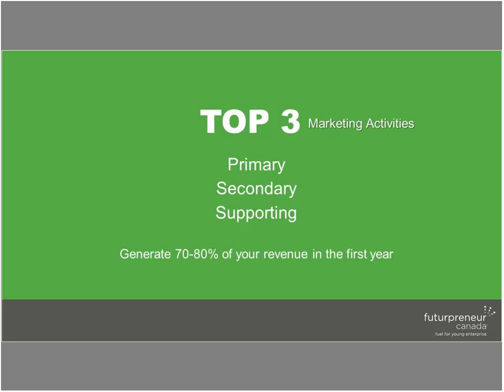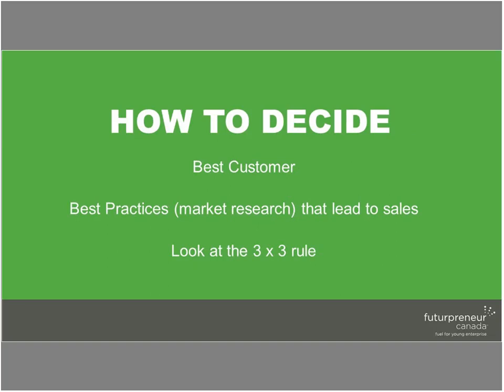Sorry, we're back after that audio interruption. So when we're talking about our example from last week in market research — how do we decide which marketing activities to pick, choosing only three? First, figure out who your best customer is, because if you don't know that, you can't do this exercise.